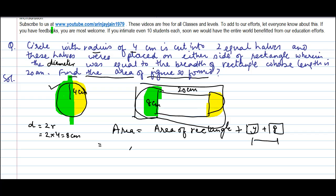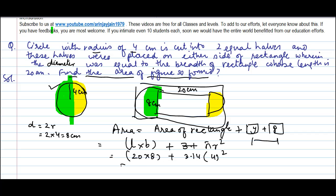So the area of the rectangle is L × B plus πr². Length is 20, breadth is 8, plus π — we can take π as 3.14 — radius is 4 squared. So we get 160 plus 3.14 × 16.